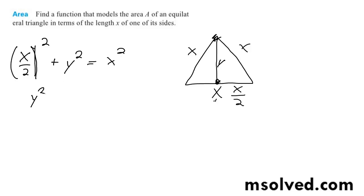So what we get here is y² equals x² minus x²/4. So y equals the square root of x² minus x²/4.